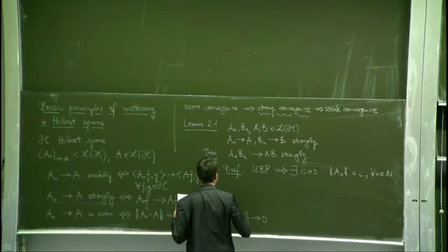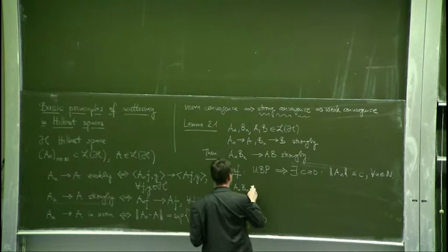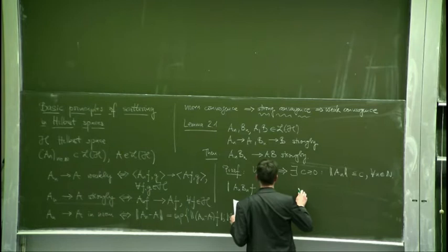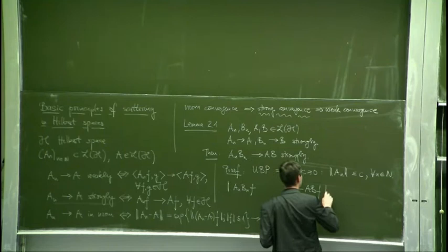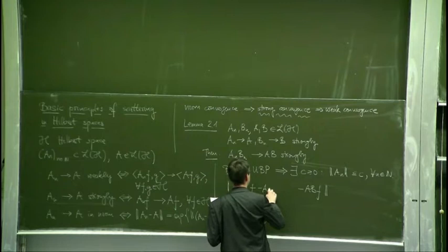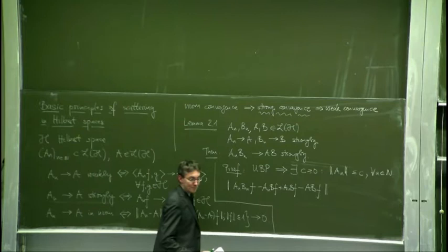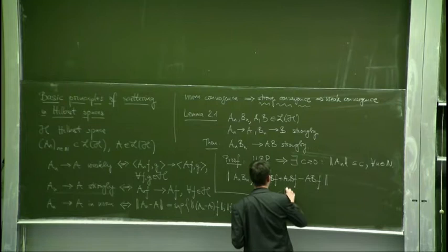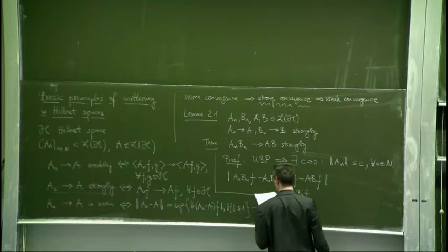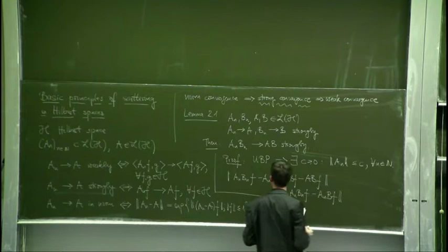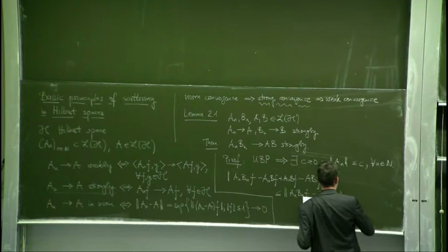For the proof, the uniform boundedness principle implies there is a constant C ≥ 0 such that ‖A_N‖ ≤ C for any N in ℕ. We consider the difference A_N B_N F - ABF and add zero in the form -A_N BF + A_N BF, then apply the triangle inequality. This gives an estimate involving ‖A_N(B_N - B)F‖ plus ‖(A_N - A)BF‖.